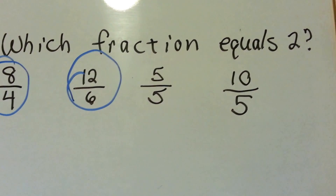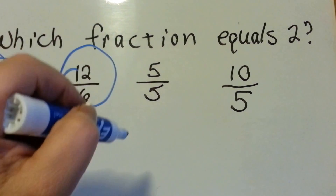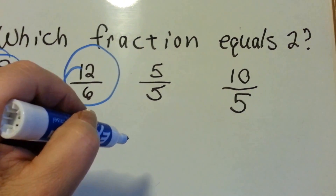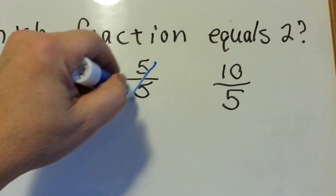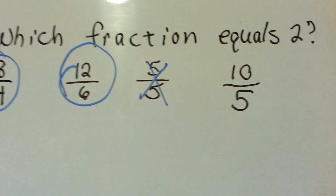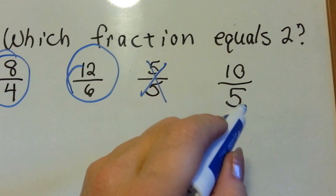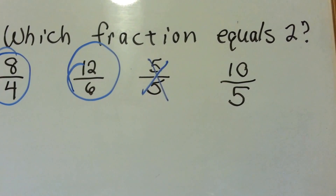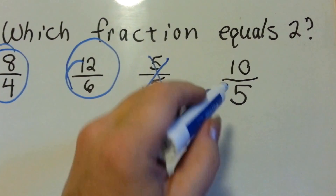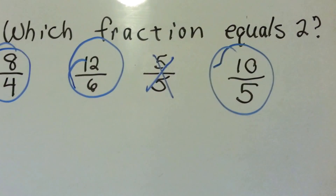How about five fifths? Do you remember the rule when the numerator and the denominator are the same? They equal one. So no, that's not equal to two. Ten fifths — how many fives are in ten? Two. So that's equal to two.